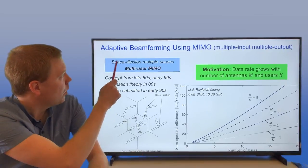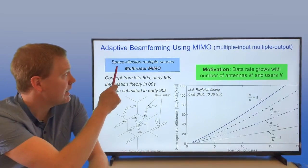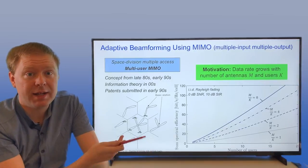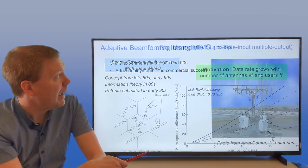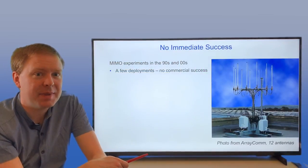This was called Space Division Multiple Access in the beginning, then it was later known as Multi-User MIMO, and today it's called Massive MIMO. And it wasn't a success immediately.